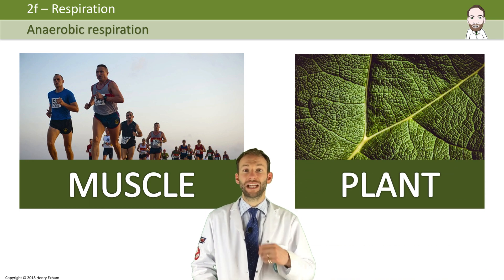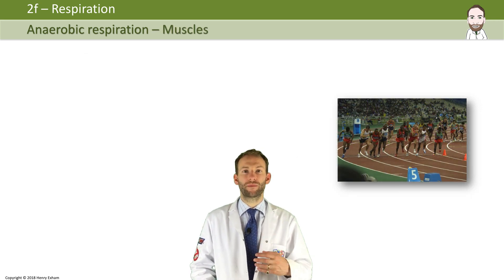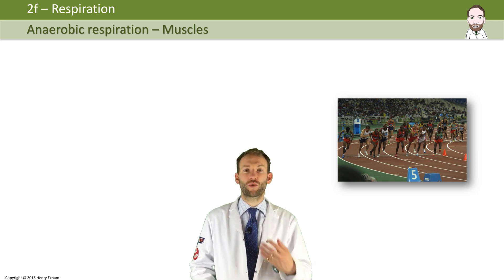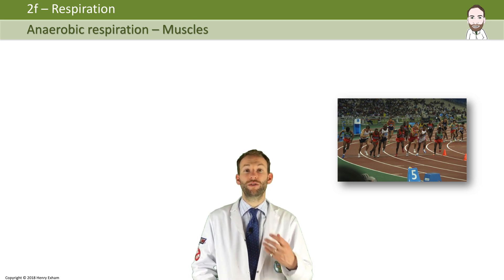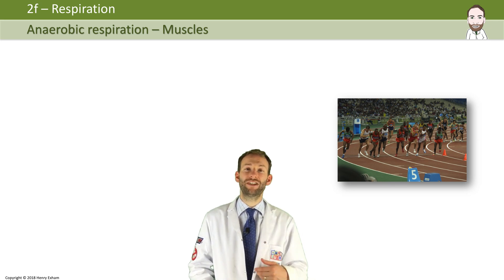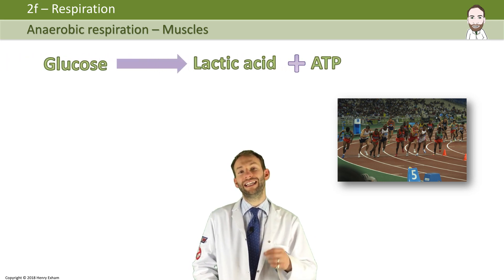So firstly, muscles. Anaerobic respiration in muscles usually happens at times of vigorous exercise where the heart cannot supply enough oxygen to the muscles quickly enough. The heart is beating as fast as it can, pumping blood around the body as quickly as it can, but it can't get enough oxygen to the muscle cells for them to keep respiring aerobically. But the muscle cells still want to release some energy — they still need to get you where you need to go. So they can still take the glucose and break it down directly into lactic acid plus ATP.